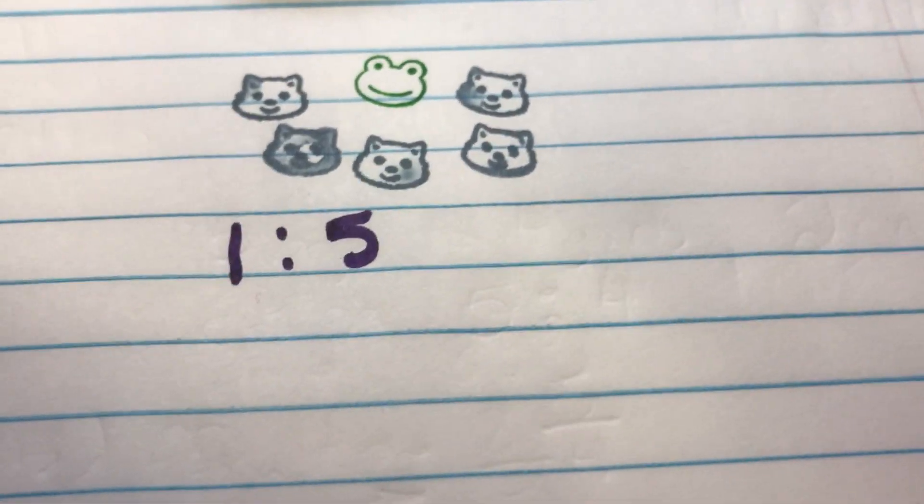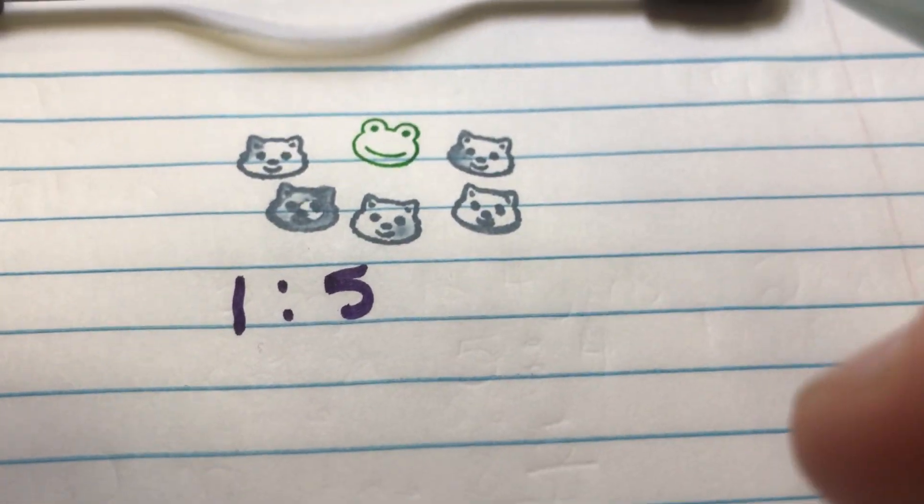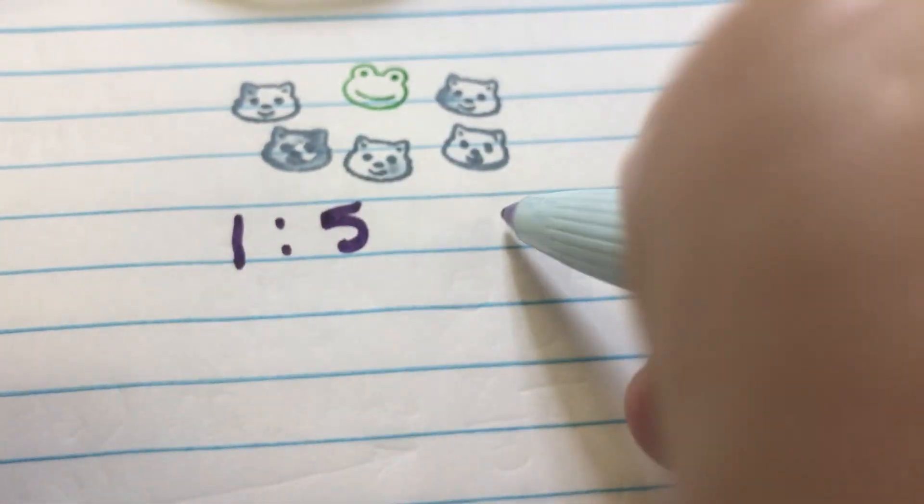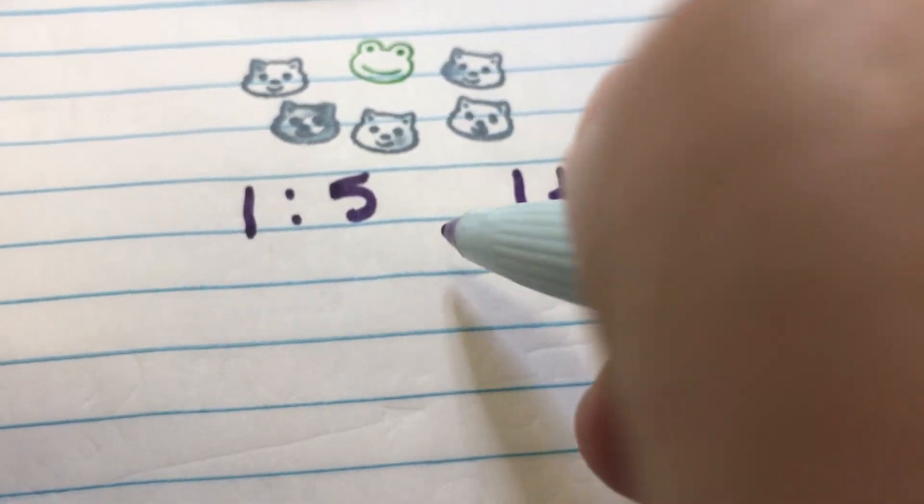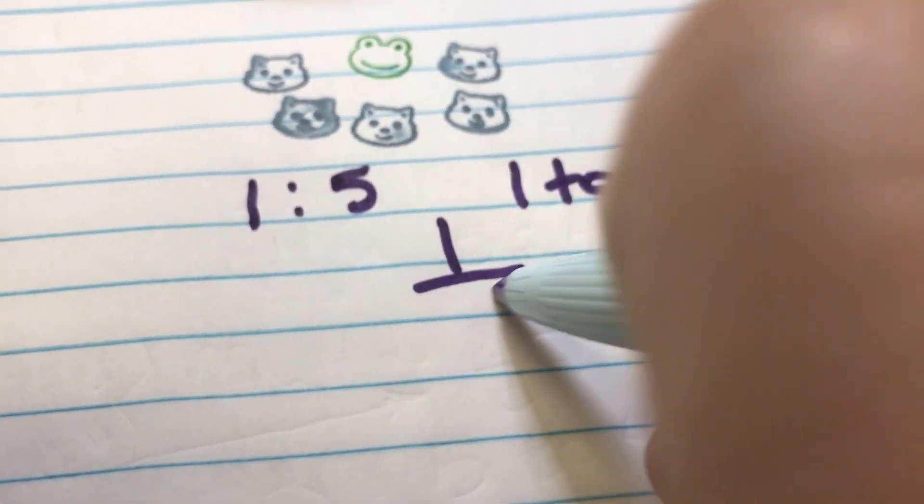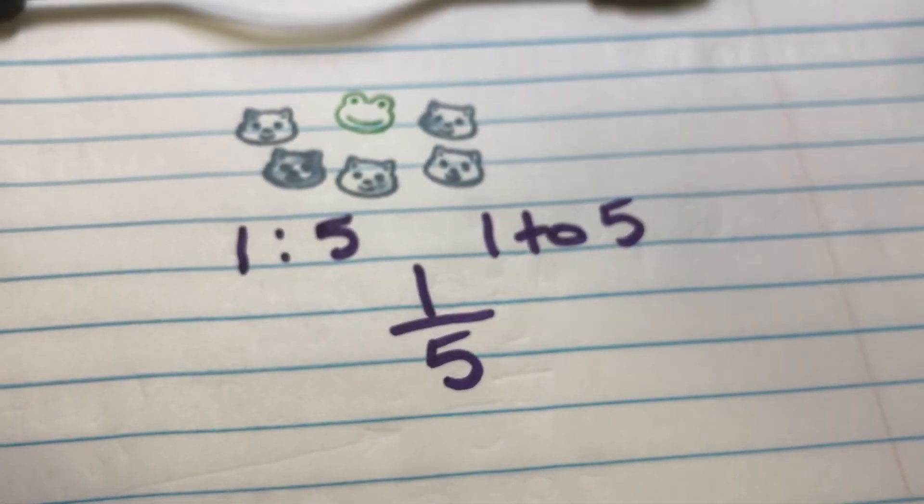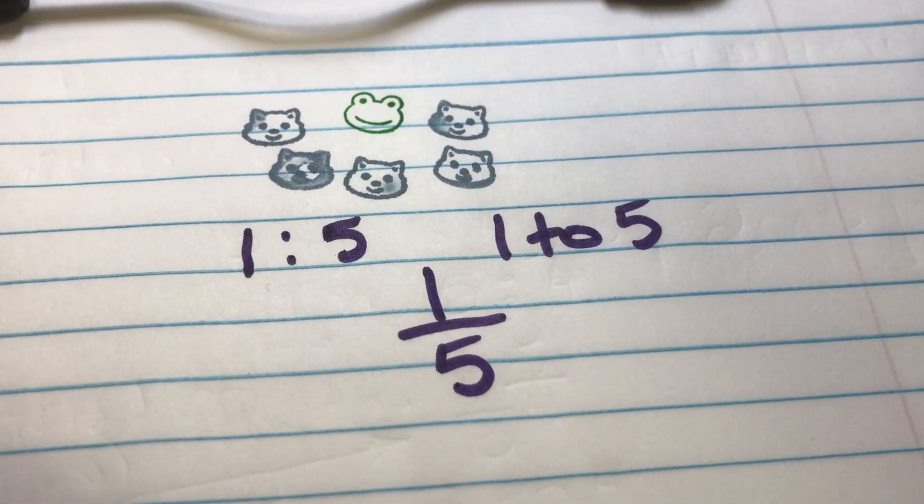We can write a ratio with a colon. We can also write a ratio with the word two in it, or we can write it to look like a fraction. But it's still pronounced one to five, not one-fifth.